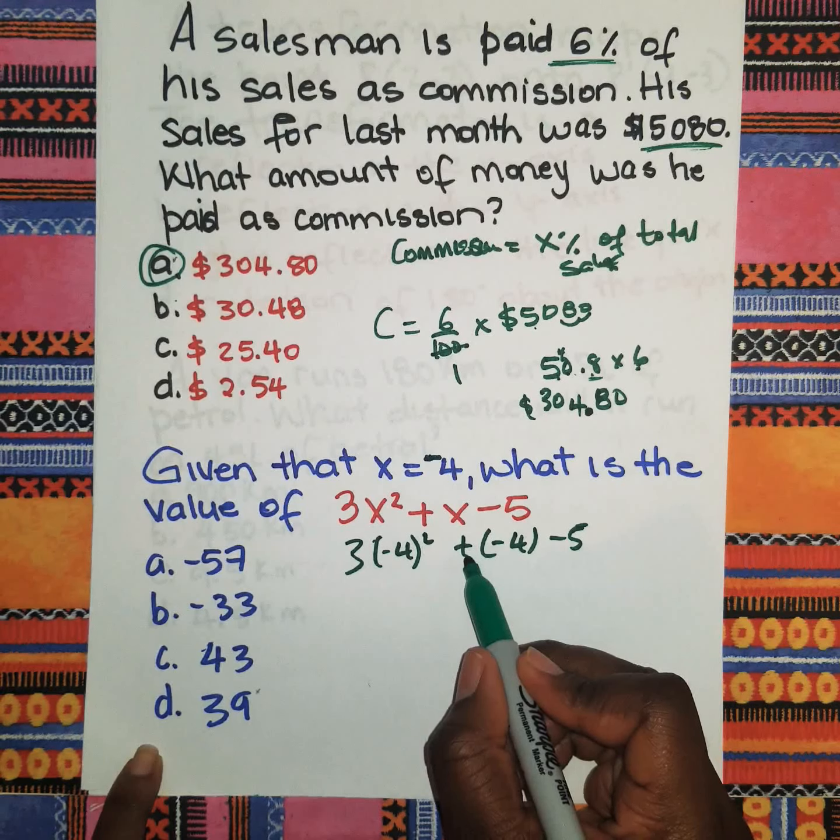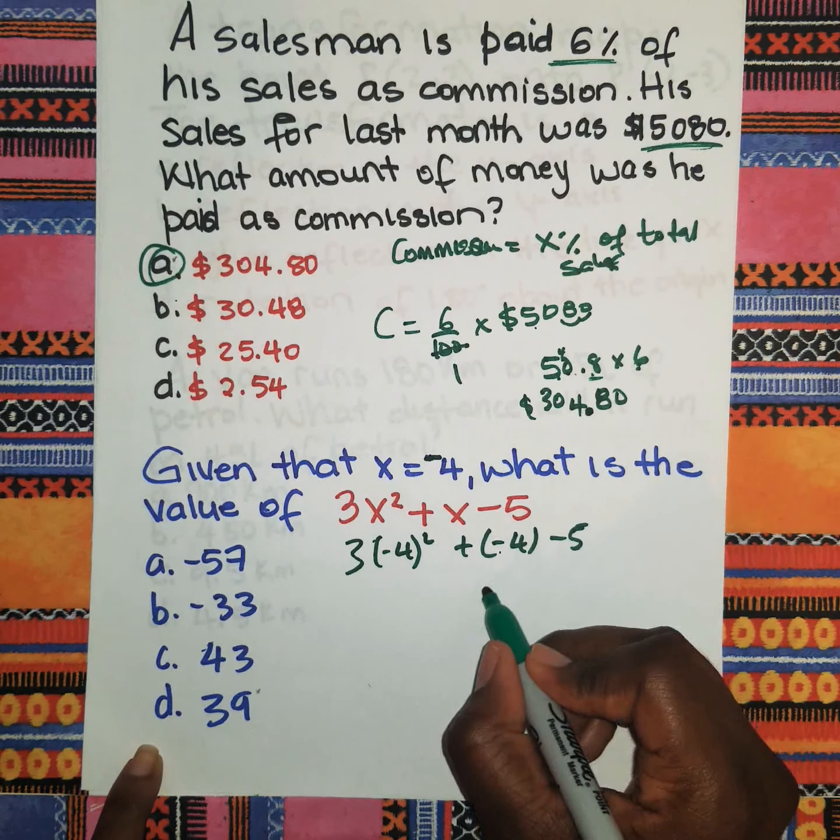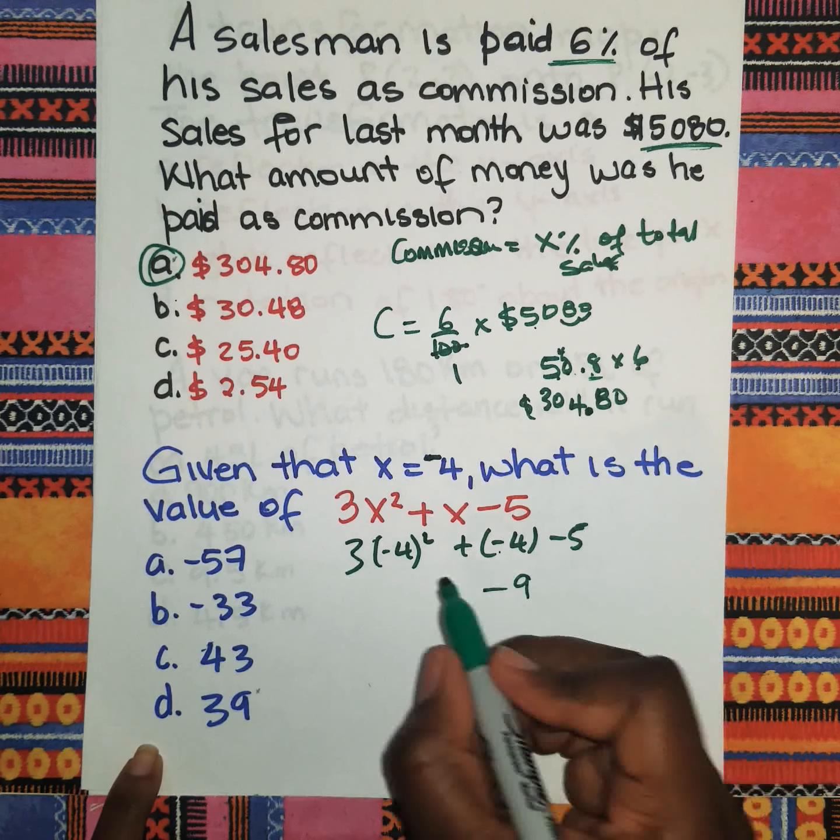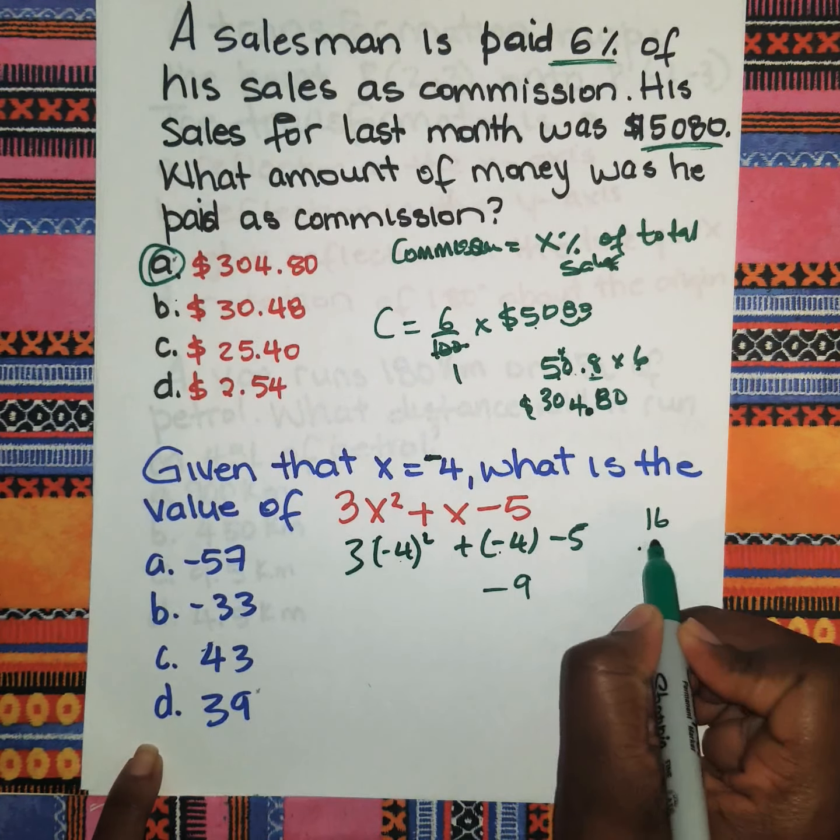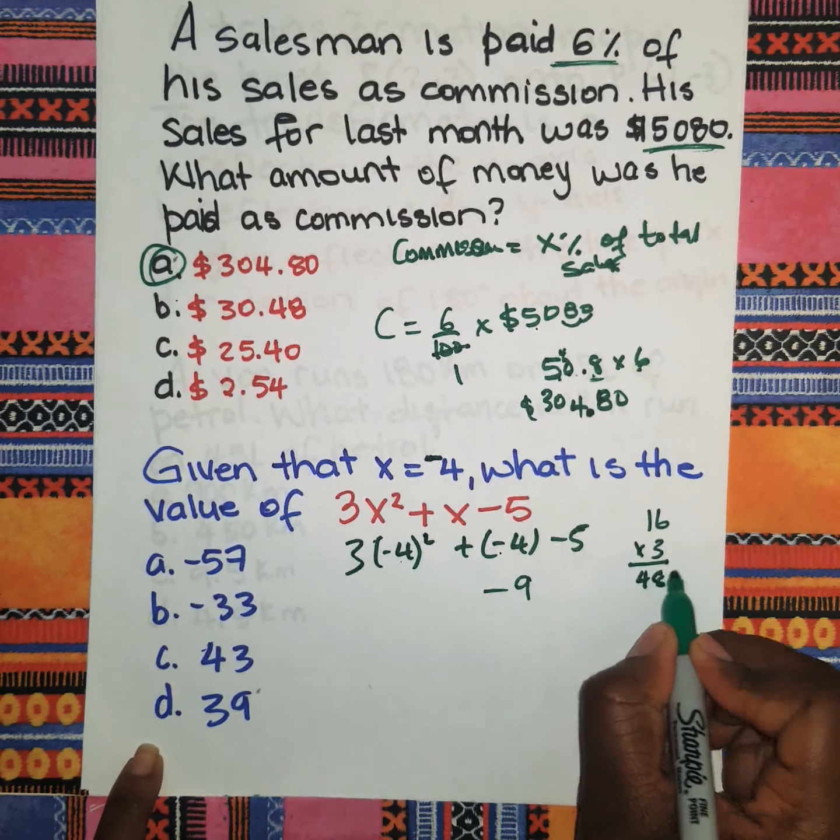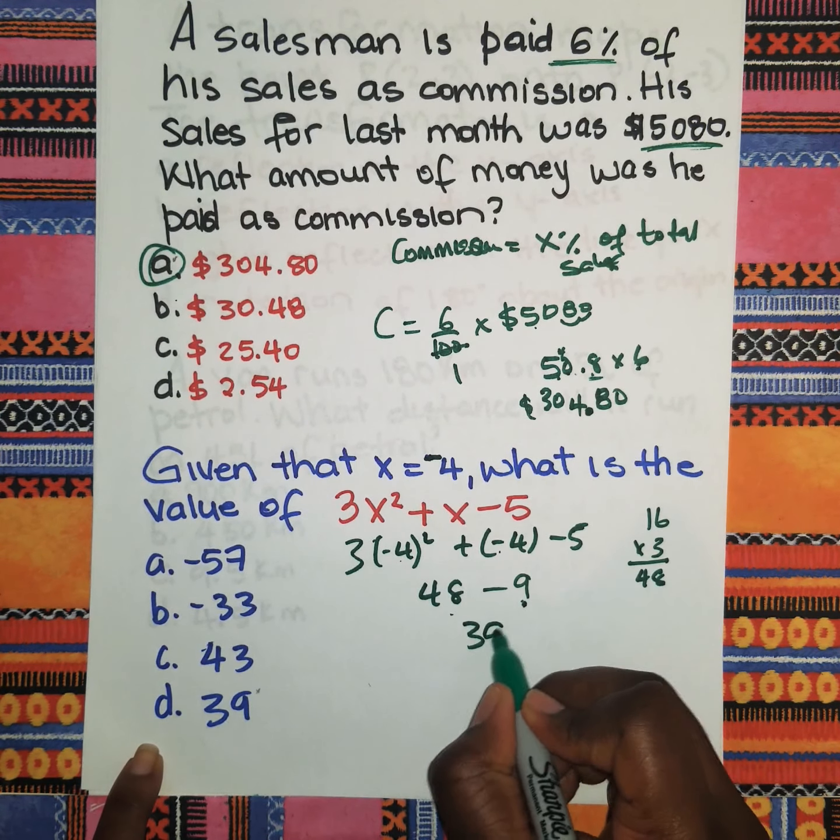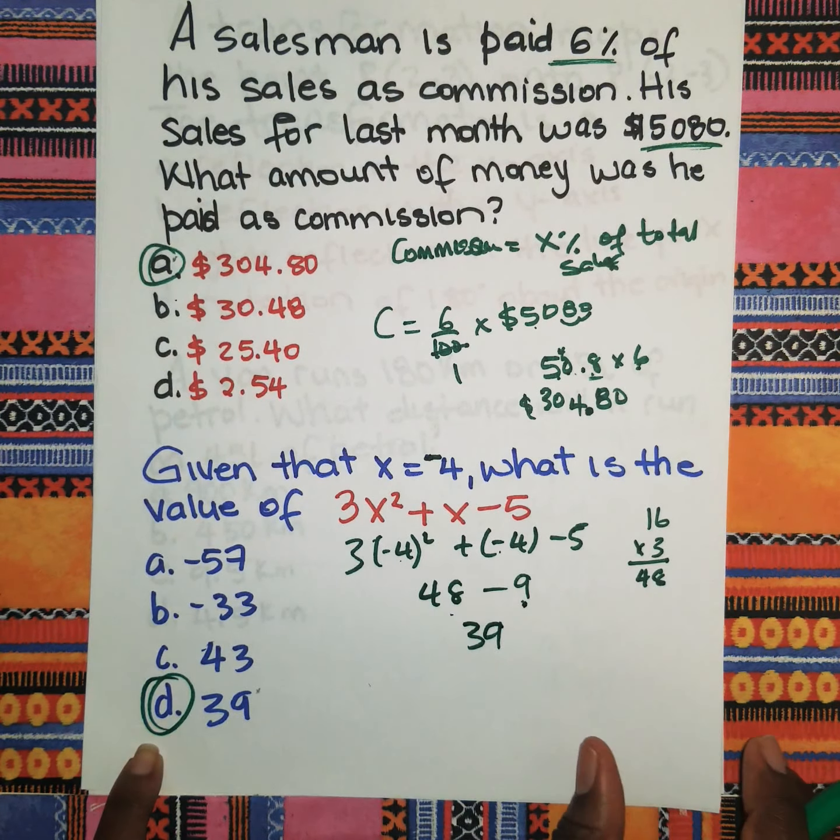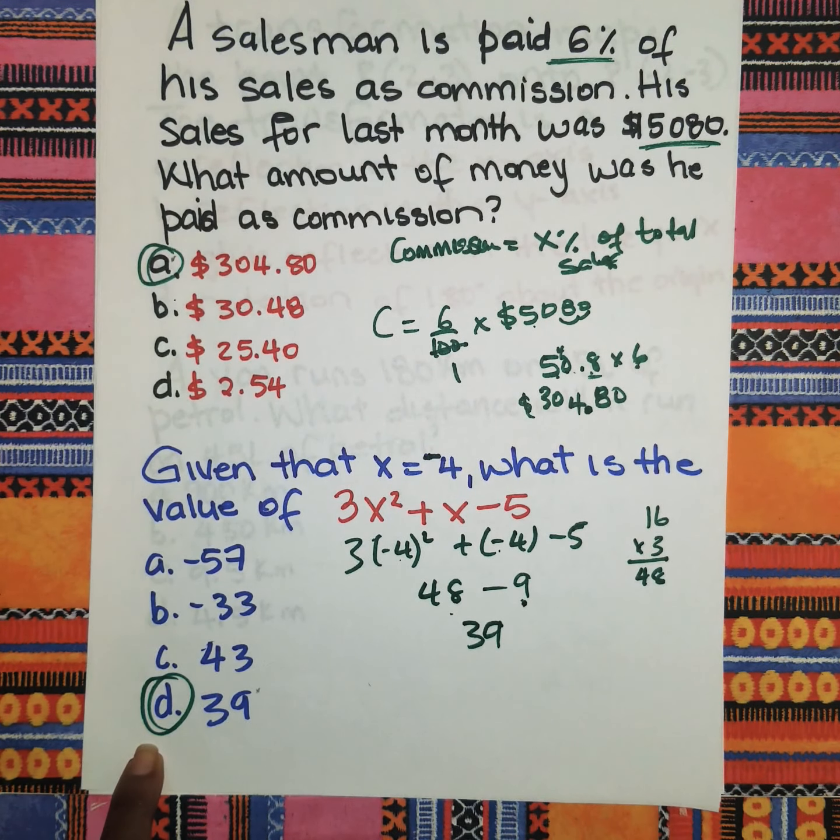Negative 4 minus 5 is negative 9. Negative 4 squared means 16, and 16 times 3 gives you 48. So 48 minus 9 will give you 39, and so D here is our answer. I hope this was useful to you guys. If you need additional help with this, please let me know and I'll be happy to assist you.